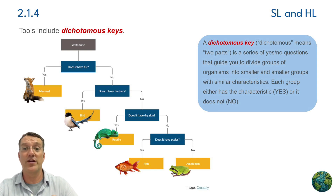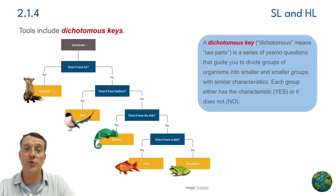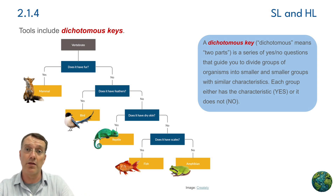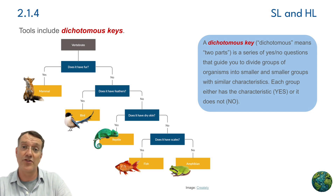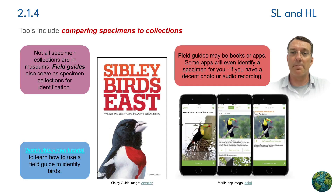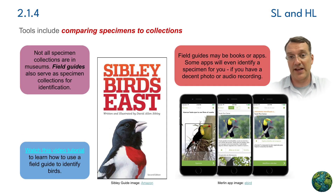Each choice leads to another pair of options, and you keep breaking down larger groups of organisms into smaller and smaller groups until you have an organism that meets all the criteria of all the different questions you've gone through. Another important method involves comparing specimens to established collections.